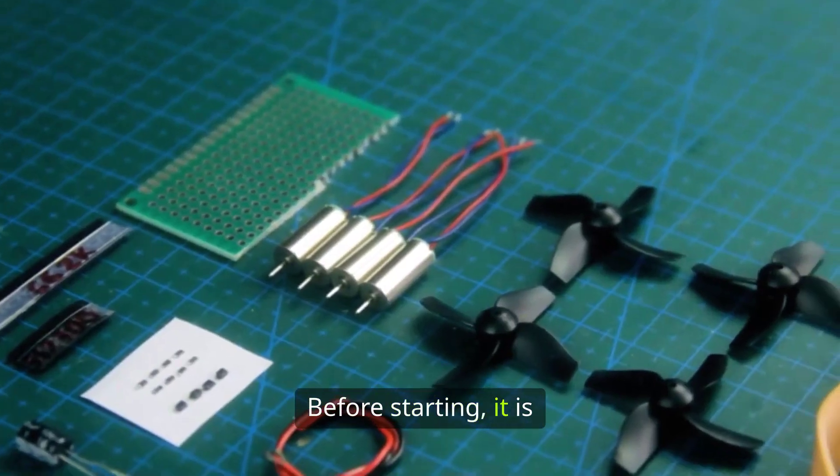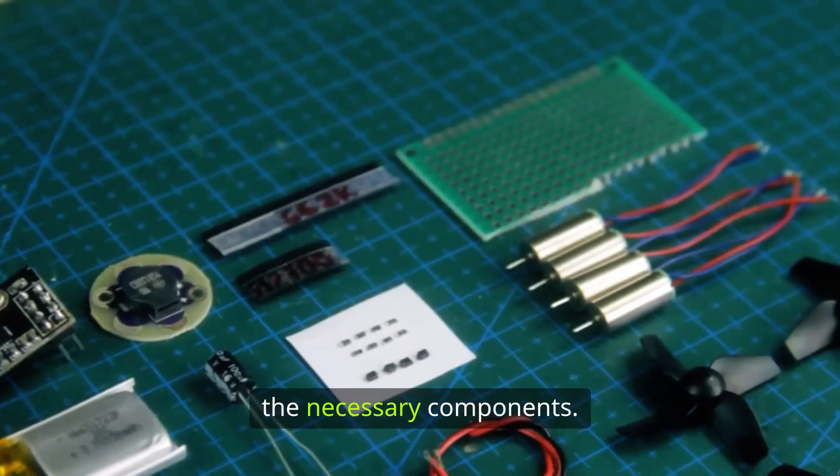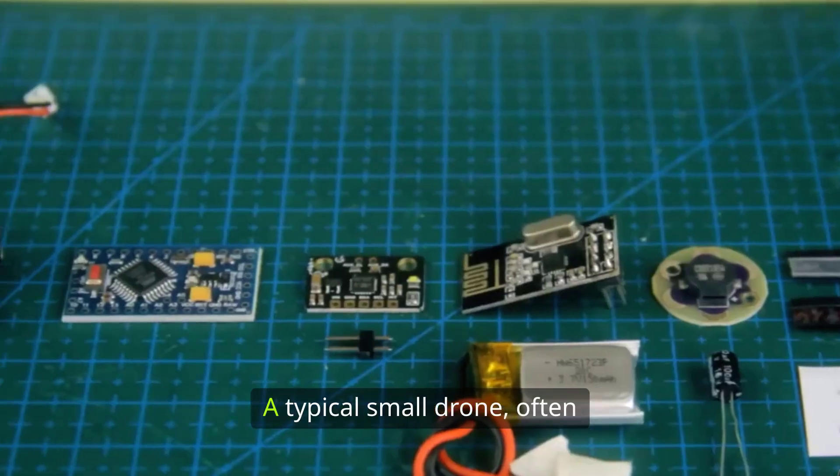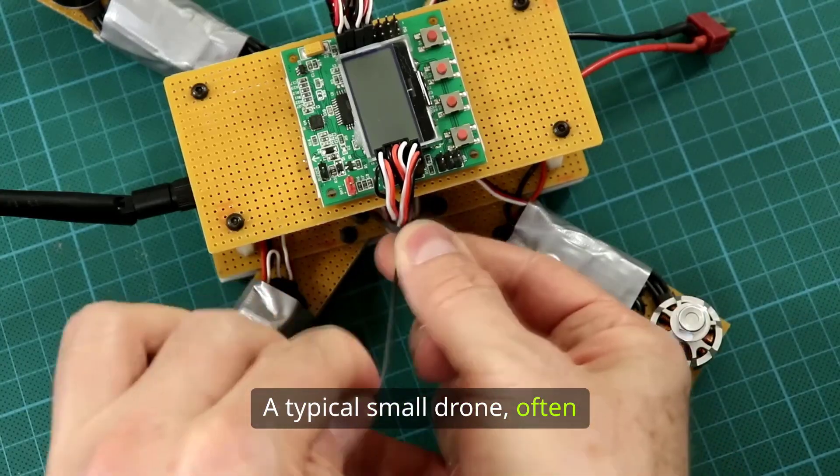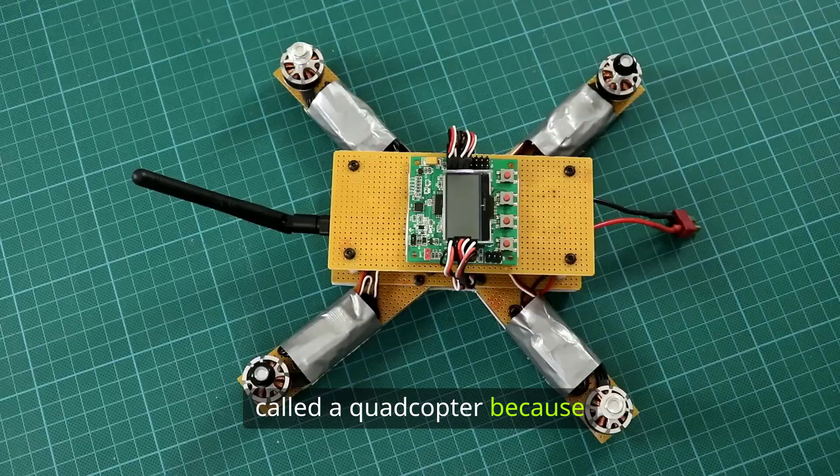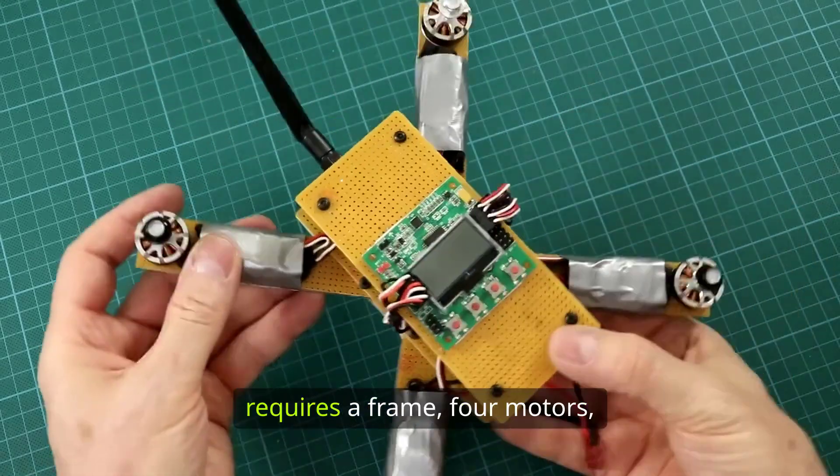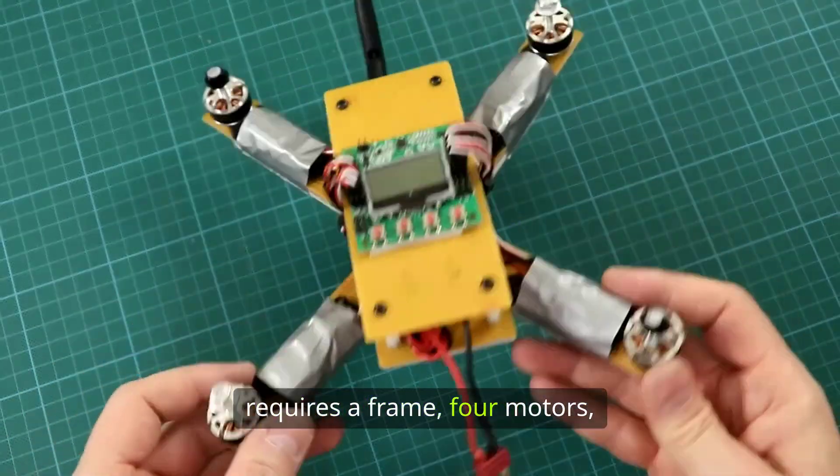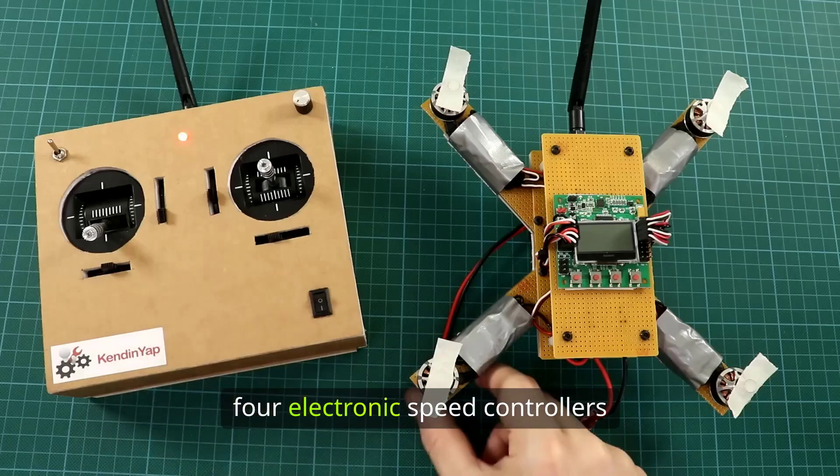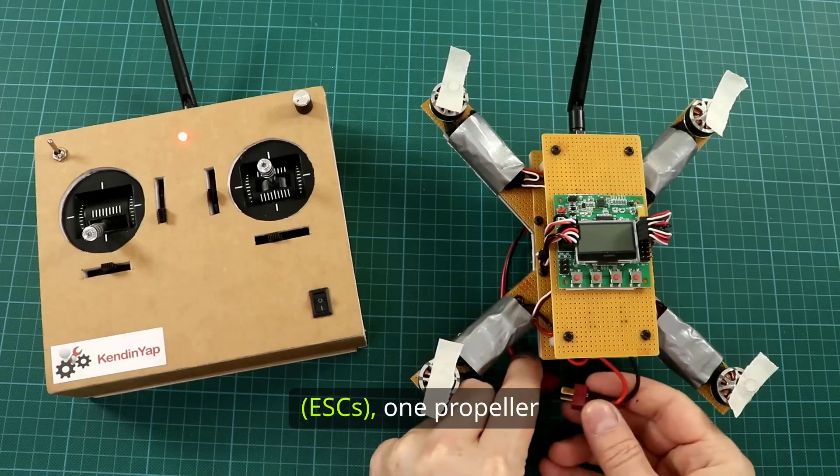Before starting, it is important to gather all the necessary components. A typical small drone, often called a quadcopter because it has four propellers, requires a frame, four motors, four electronic speed controllers (ESCs),